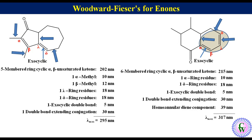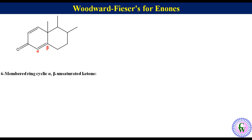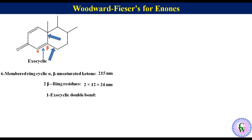Now let's take the example of cross-conjugated enones. In this example there are two alkenes conjugated to the keto group. One alkene has only one ring residue while the other has two ring residues. The alkene with the greater number of ring residues is the only one considered for the calculation. Labeling as alpha and beta: base value for a six-membered cyclic alpha-beta unsaturated ketone is 215 nm. Two beta ring residues add 2 × 12 = 24 nm, and the exocyclic double bond adds 5 nm. Lambda max = 215 + 24 + 5 = 244 nm.